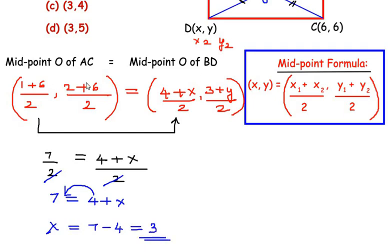Now similarly let us equate the y coordinates. That is (2 + 6)/2 that is going to be 8/2 = (3 + y)/2. Now again you can see the denominators are same so we can easily cancel them off. And we are left with 8 = 3 + y.